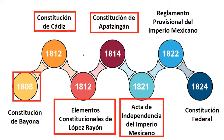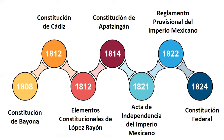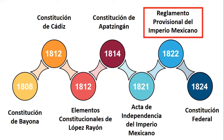Para legitimar el gobierno de don Agustín de Iturbide como primer emperador mexicano, se establece el reglamento provisional del Imperio Mexicano para el año de 1822. En 1824 tenemos nuestros primeros antecedentes ya como una república de carácter federal en la Constitución de 1824.